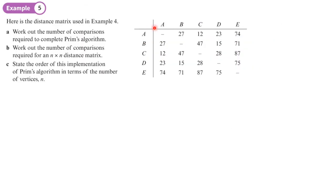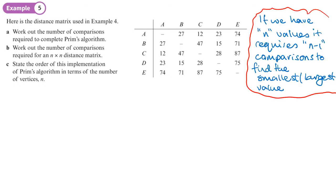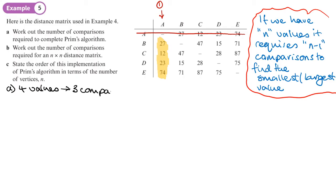This is the same distance matrix from the previous example, and this part of the question asks us to work out the number of comparisons required to complete Prim's algorithm. We need to know that if we have n values, it requires n minus one comparisons to find the smallest value. Starting at A, we cross out row A and look at four values to decide which is smallest, so that would be four values — which means three comparisons.